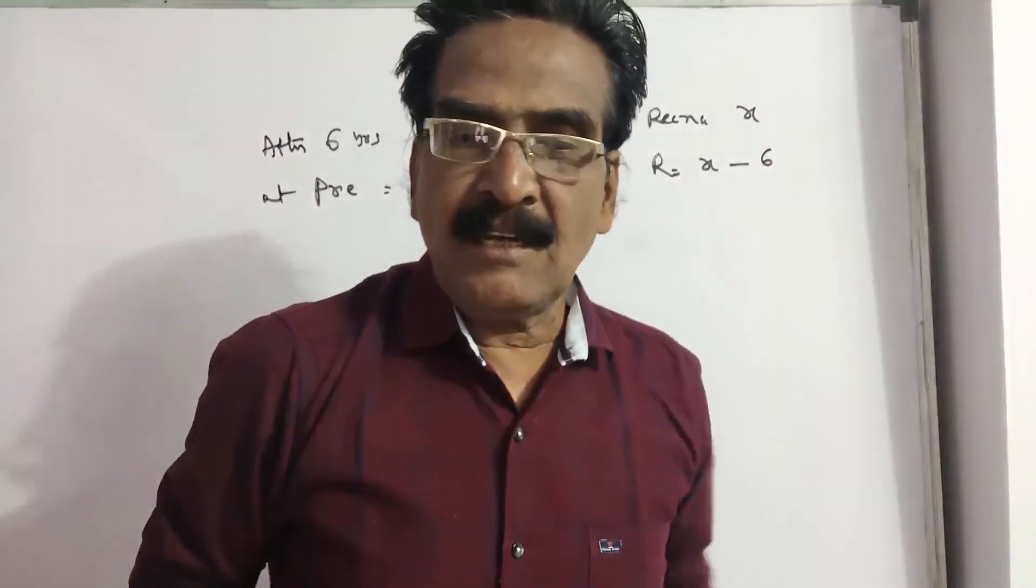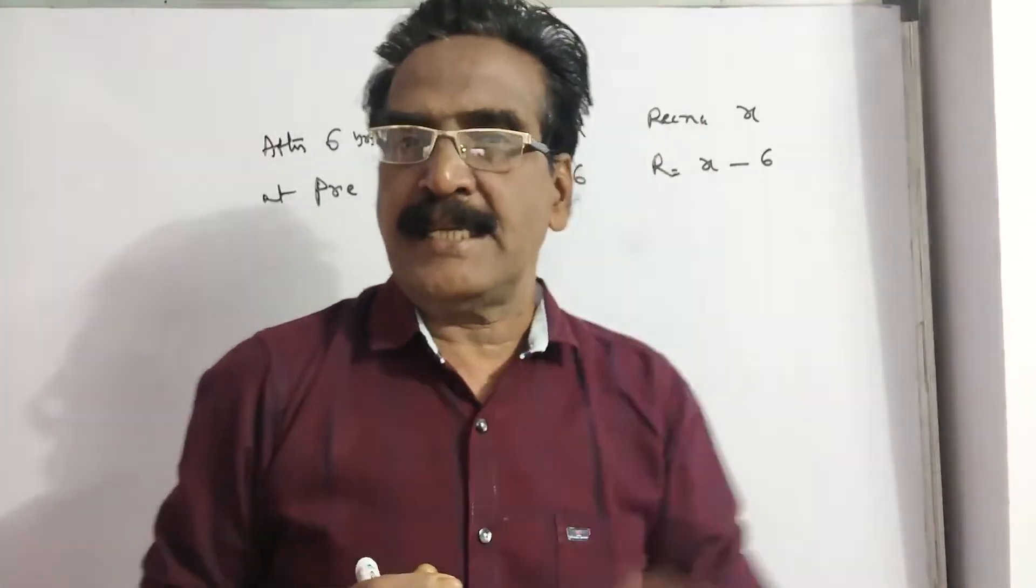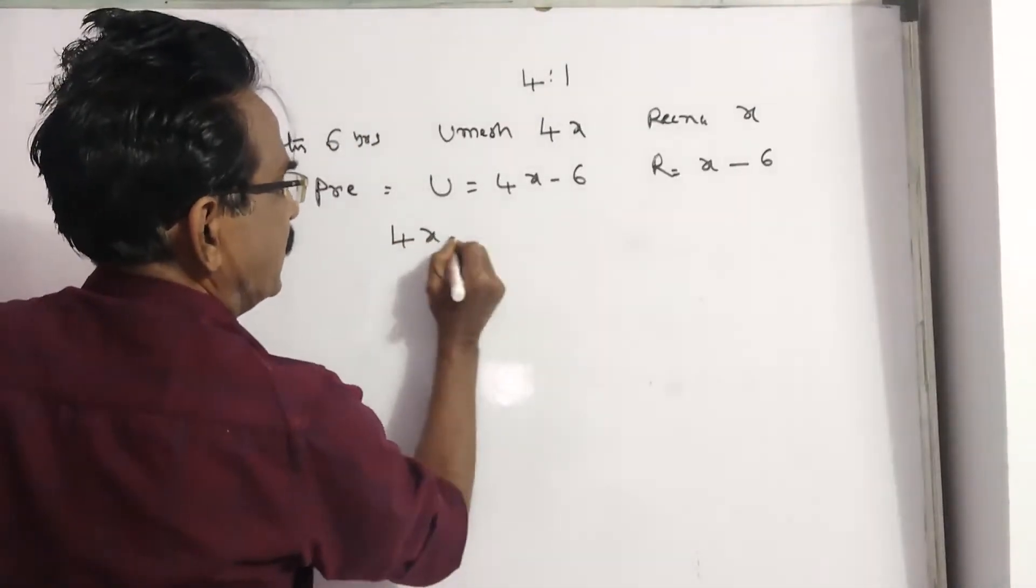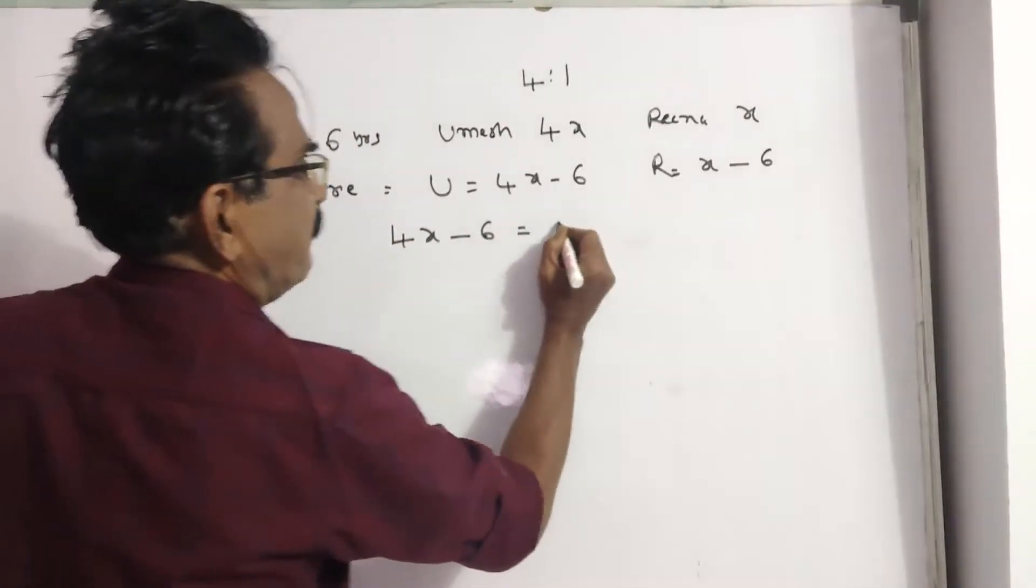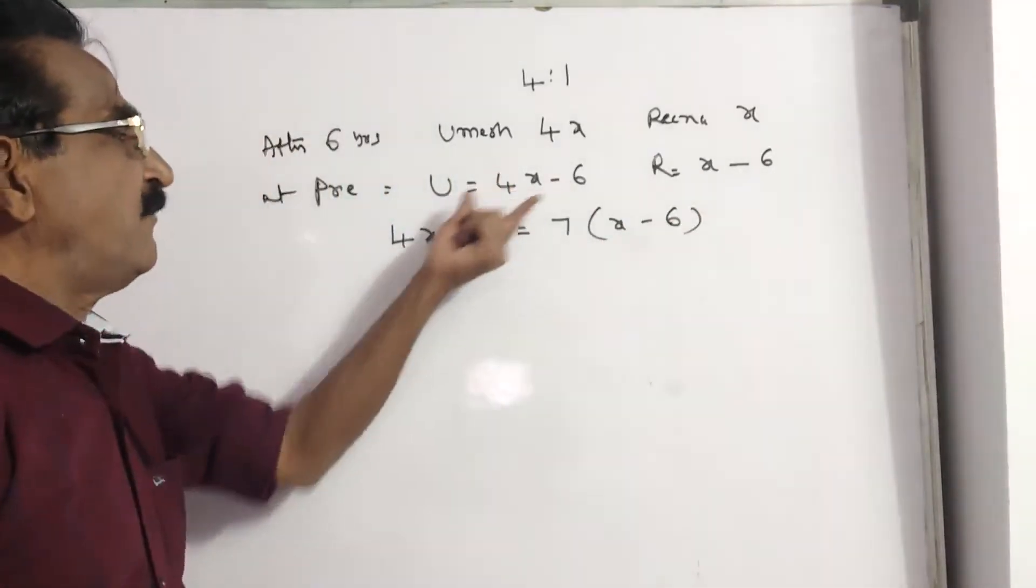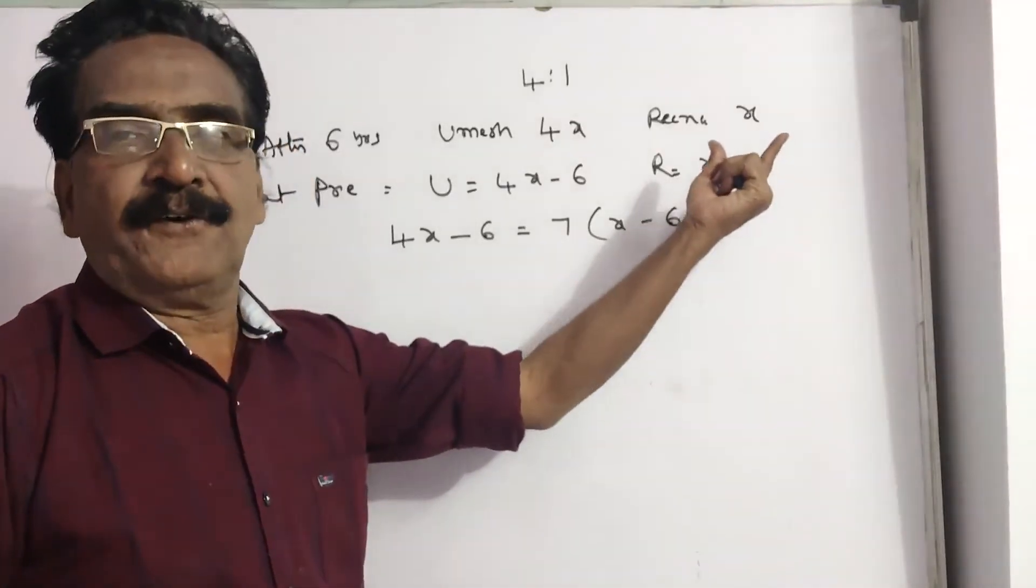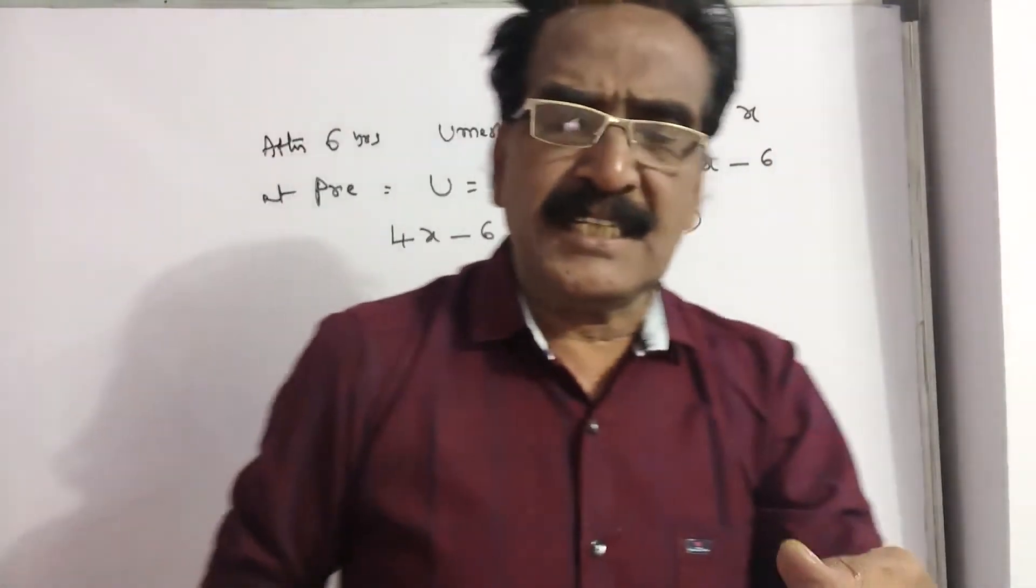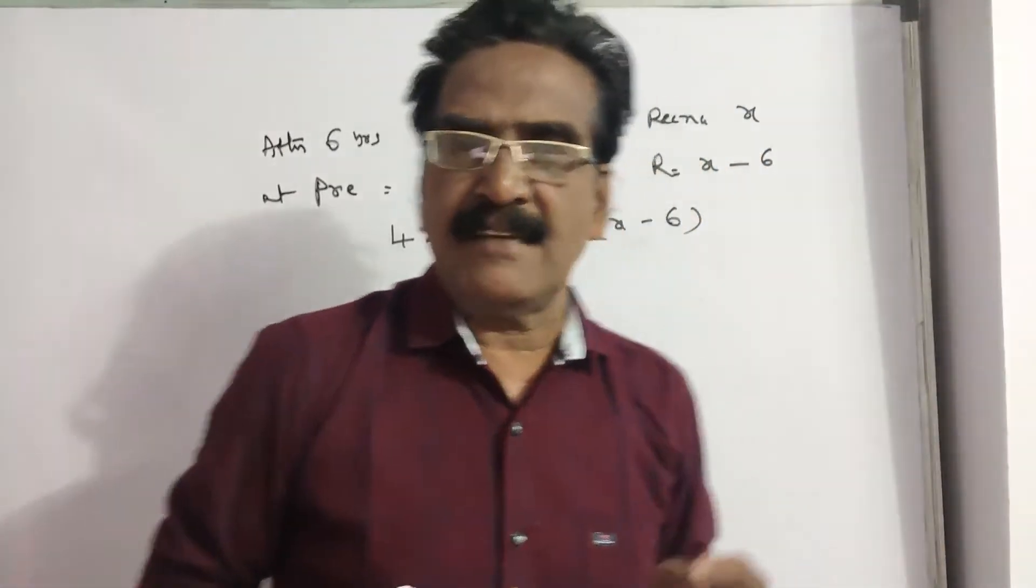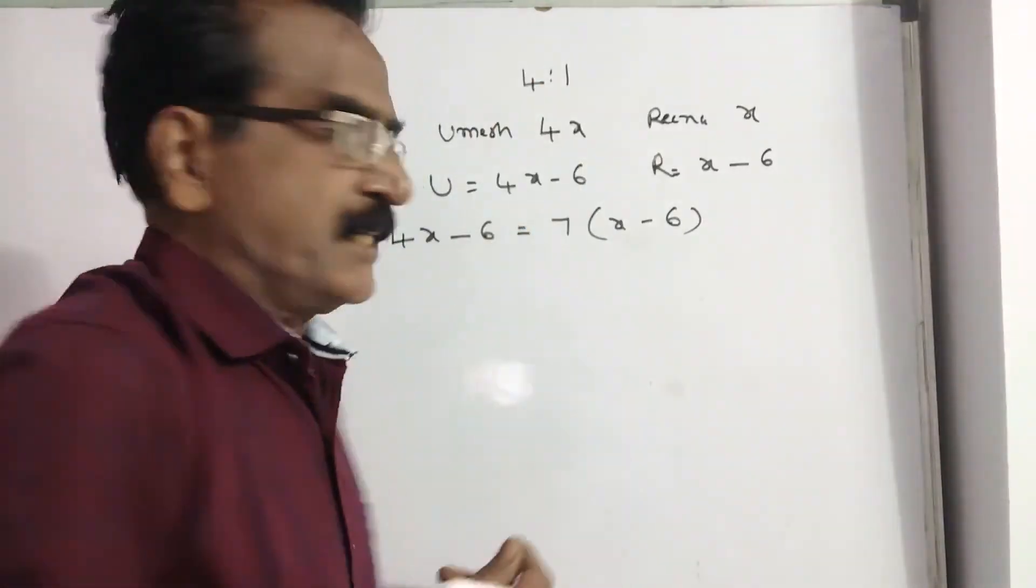Now, the age of Umesh is 7 times the age of Rena. This is the age of Umesh. The age of Mahesh data is given. The problem is not required to find the age of Umesh.